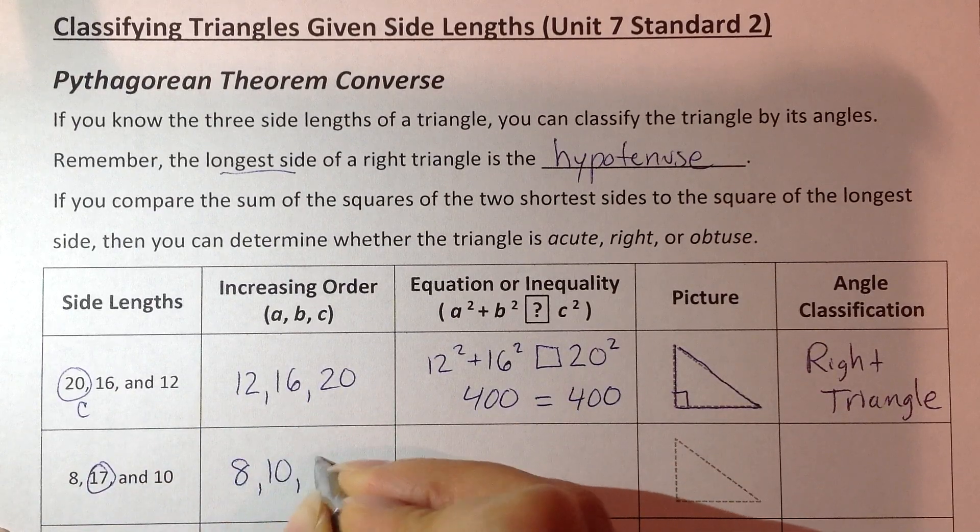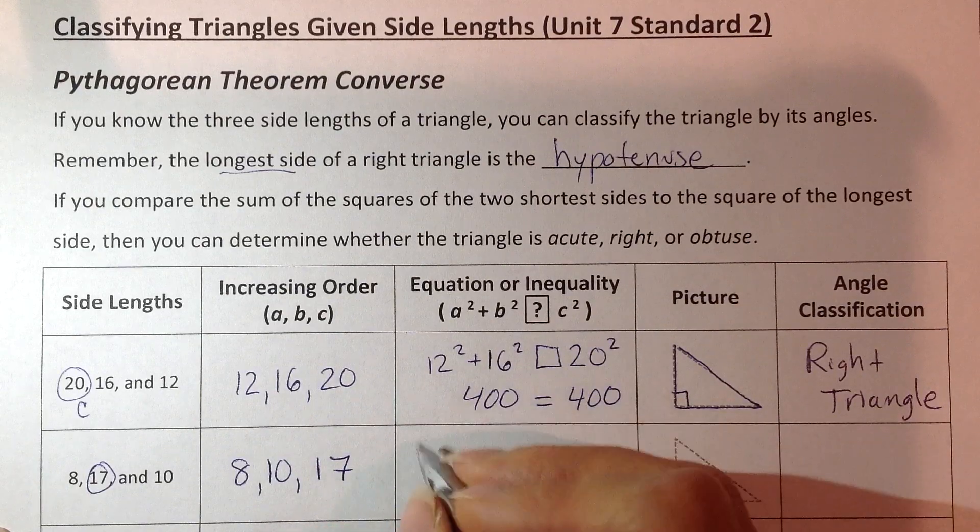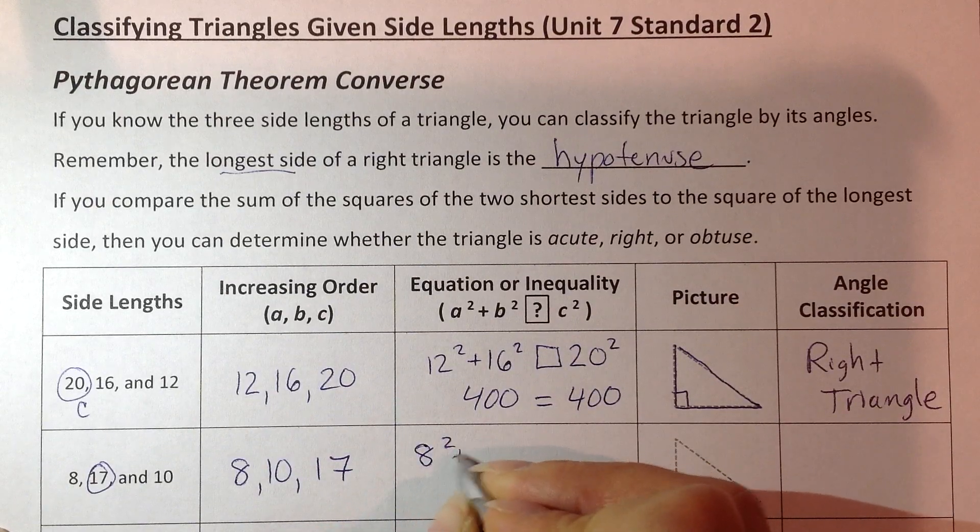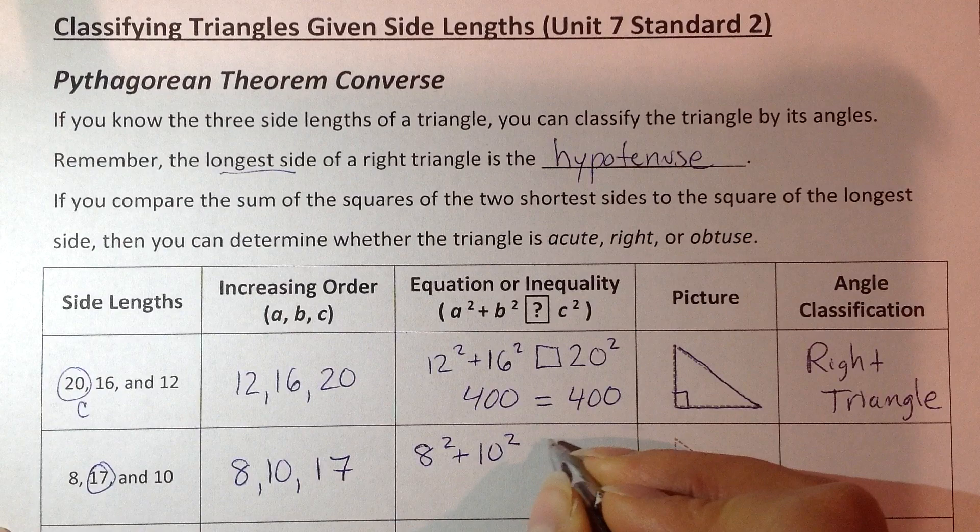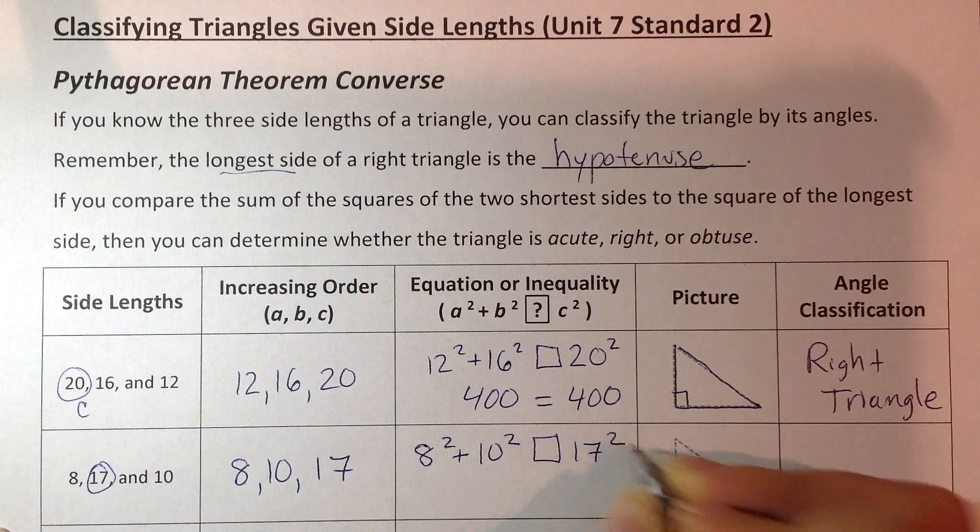Again, if it helps, put them in increasing order, small to big. Square the two shorter ones, find their sum. How does that compare to the square of the longest side?